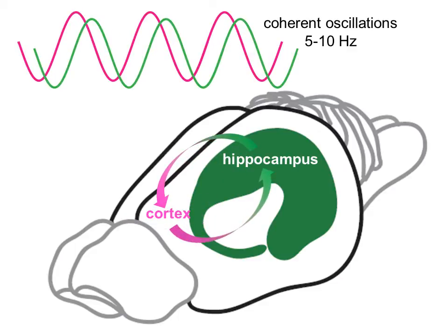Coherent oscillations between the brain cortex and hippocampus at a theta frequency of 5 to 10 Hz are believed to synchronize the two structures whenever the brain retrieves information from memory to guide decisions.